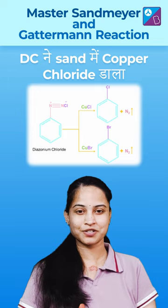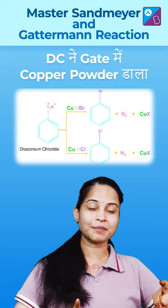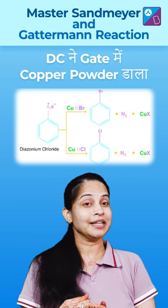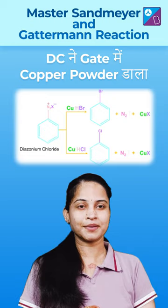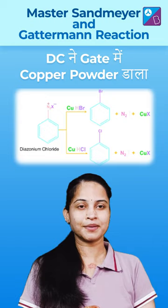Diazonium Chloride is the common reactant between Sandmeyer and Gattermann Reaction. In Gattermann Reaction, we use copper powder, whereas in Sandmeyer Reaction we use cuprous chloride — that is the main difference. The rest of the reactions you will be able to see here.